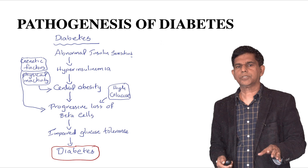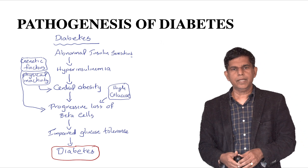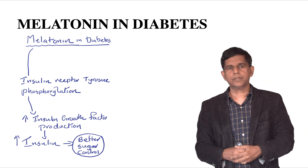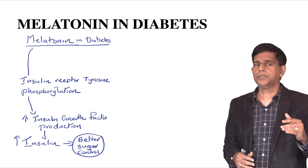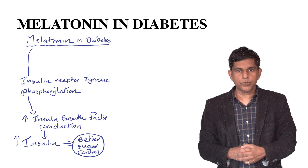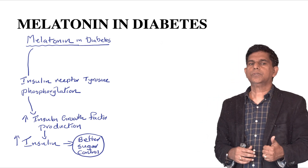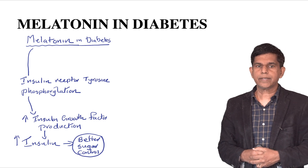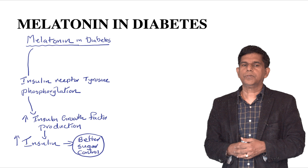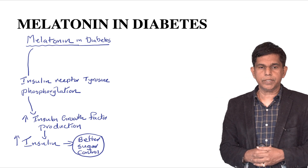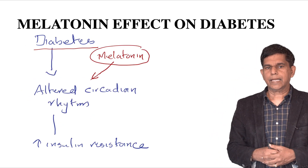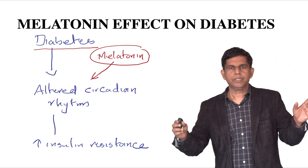How does melatonin help in diabetes? What is the pathophysiology behind it? Melatonin works on insulin receptor tyrosine phosphorylation, which increases insulin growth factor (IGF) production. When IGF increases in the body, there is better sugar control.